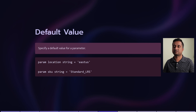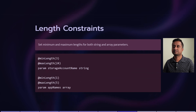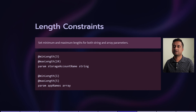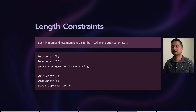Default value: whenever you are declaring a particular parameter, you want to initialize it with a default value. In our example, we are initializing the location with East US and the SKU for the storage account with Standard LRS.